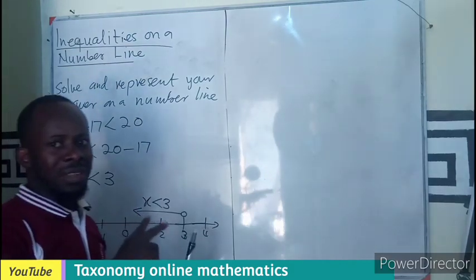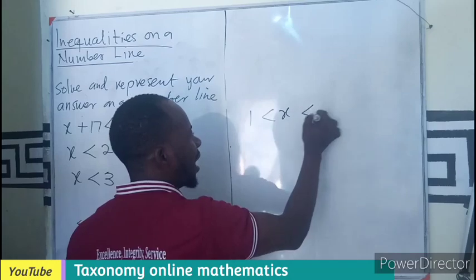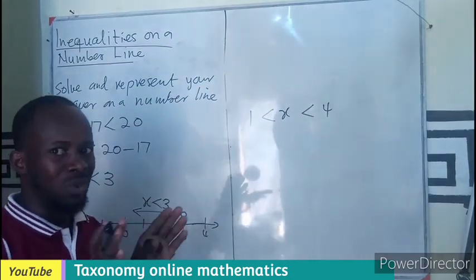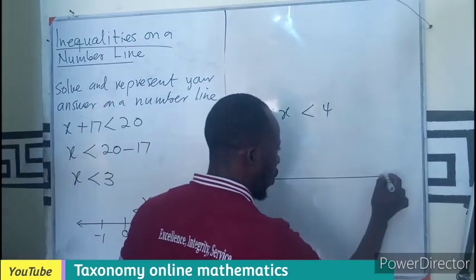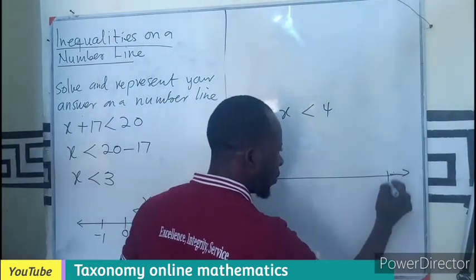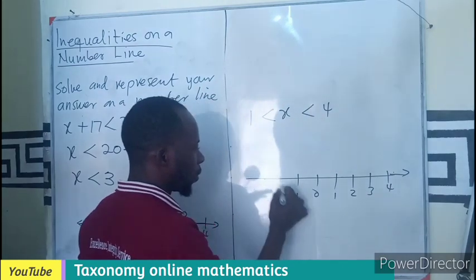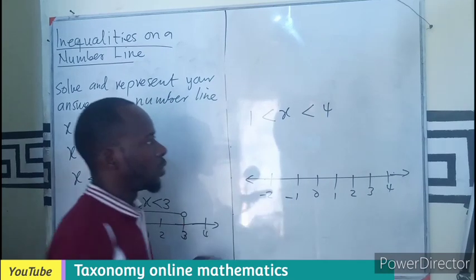Then, don't forget also that there are instances where you have 1 less than x less than 4, which is a double inequality. There is nothing so separate or difficult about this. Just draw your number line.